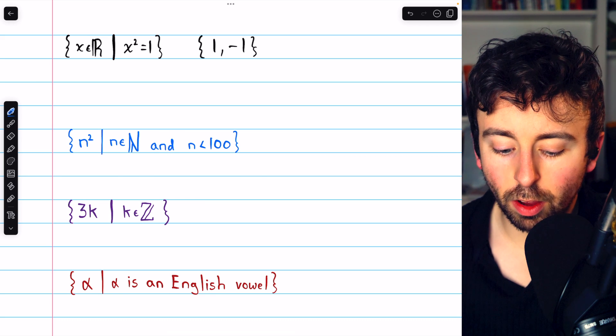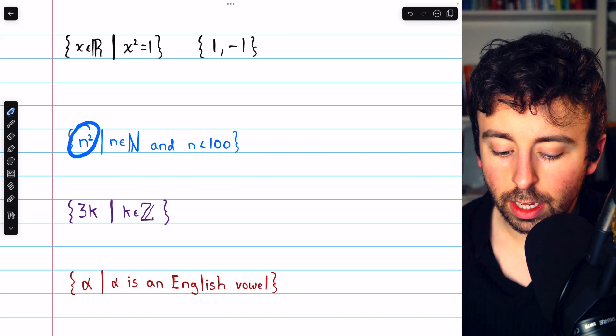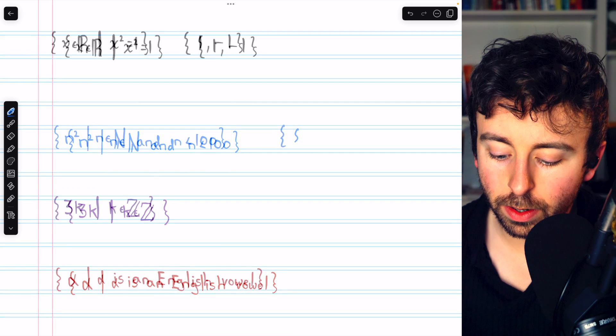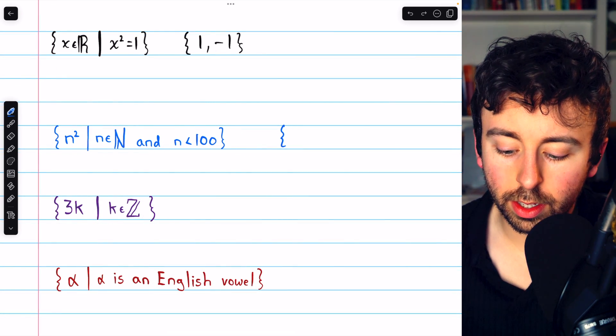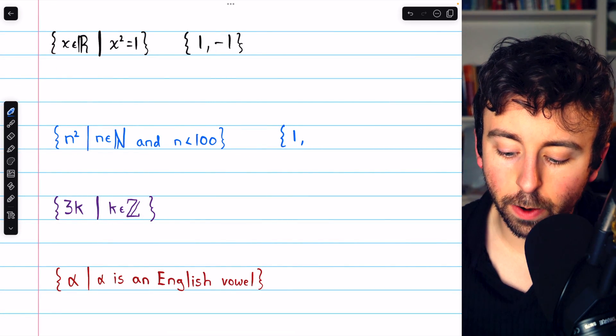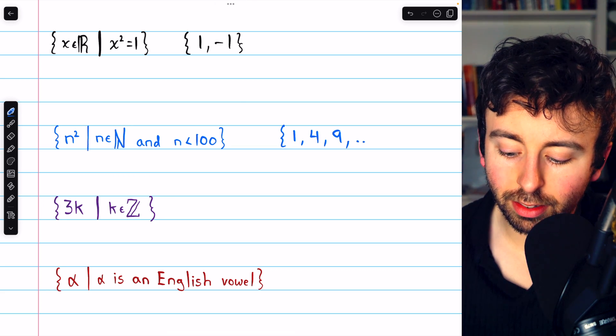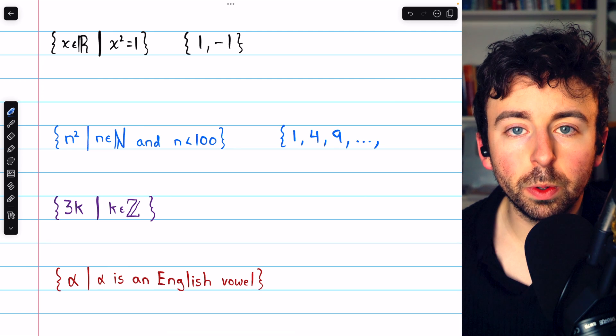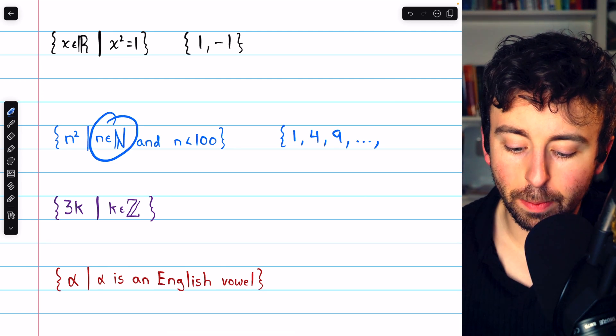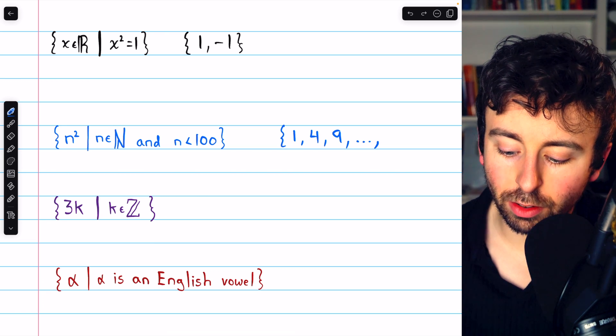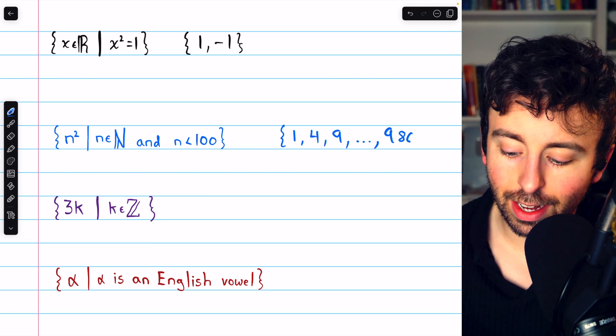The next set contains all numbers n squared, where n is a natural and n is less than 100. The first natural number is 1, so this set would contain 1 squared. It would also contain 2 squared and 3 squared and so on, all the way up through, well, n is a natural number and it has to be less than 100. So all the way up through 99 squared, which is 9,801.